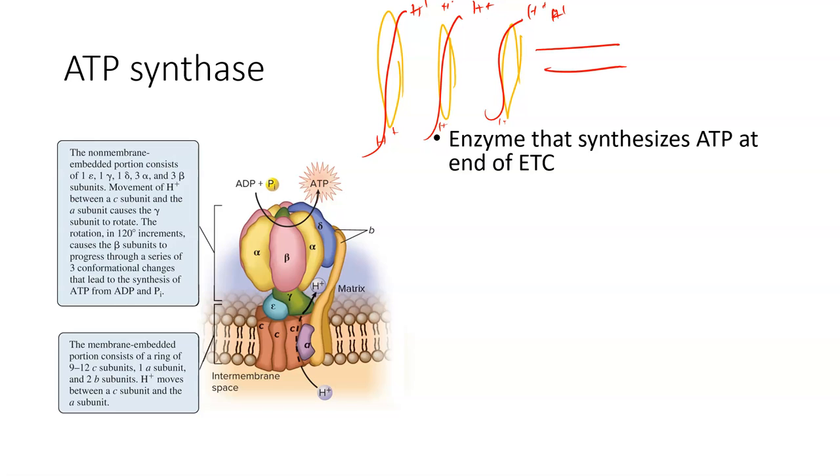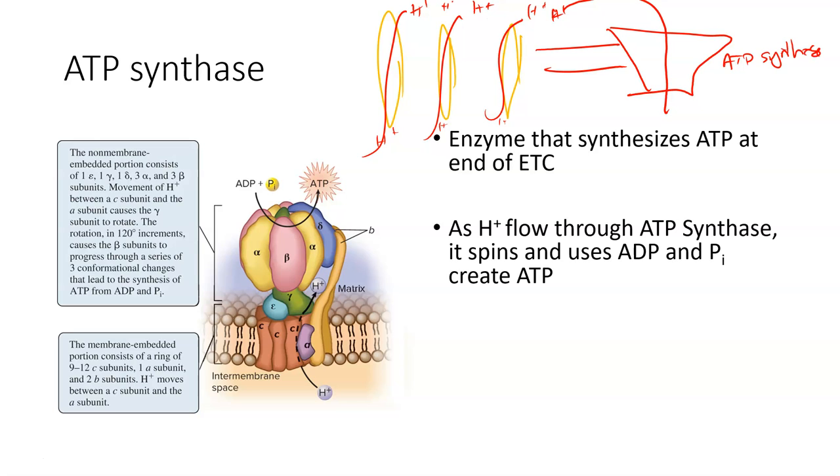Now you have a lot of hydrogen molecules up here that we got from FADH2 or NADH. Now they're going to run through something like a windmill. So eventually they're going to run through this ATP synthase. And as they run through it, it's going to cause this ATP synthase to spin. As it spins, it creates ATP energy.